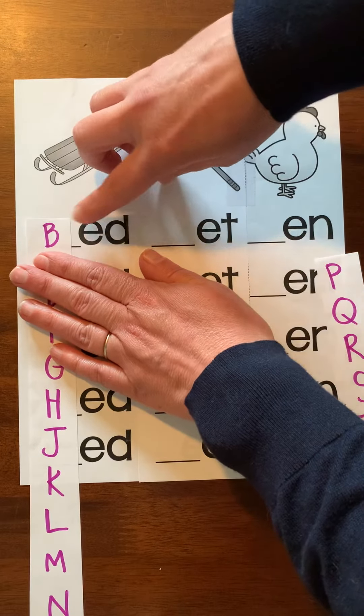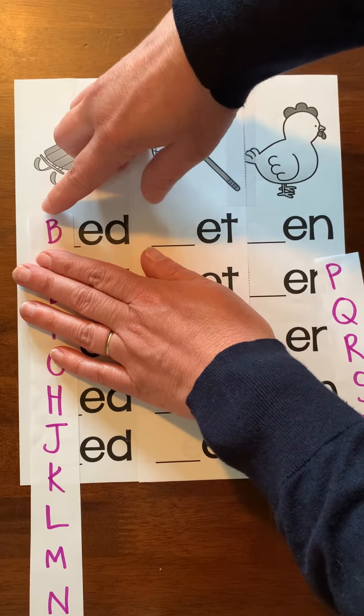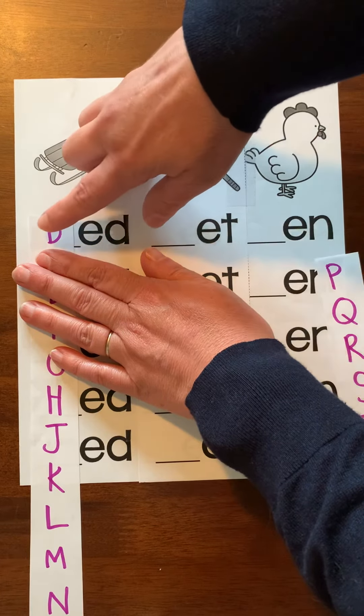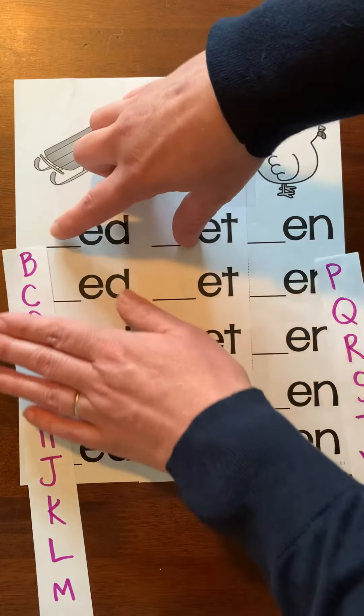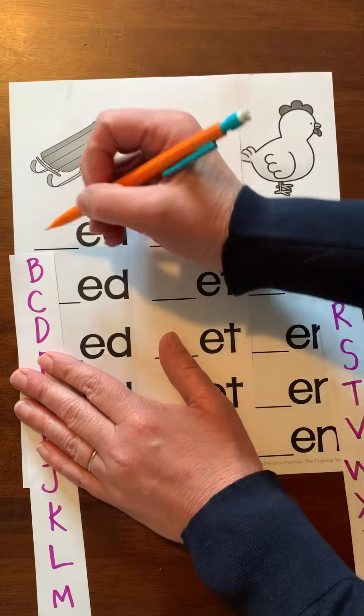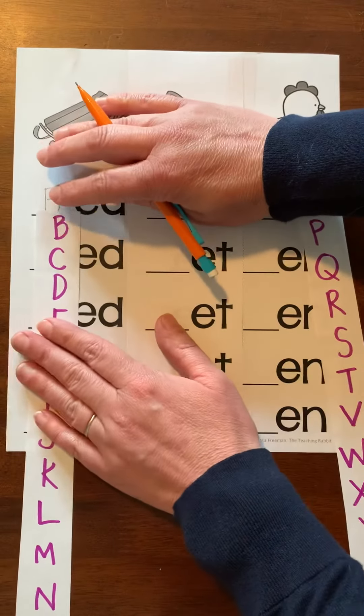B-ed. Say it like that. Then you want to say it smoothly. Say it fast. B-ed, bed. Does that make a word? Sure does. So we could put a B right there. Bed. Let's go down to this one.